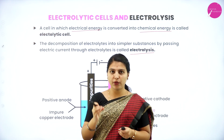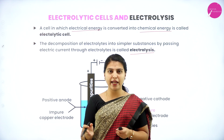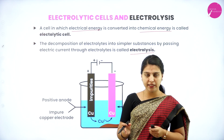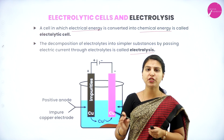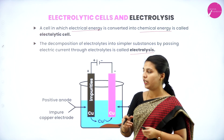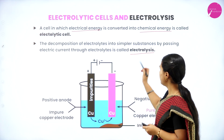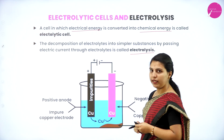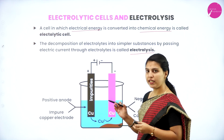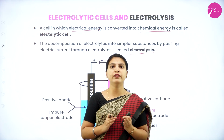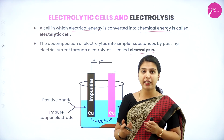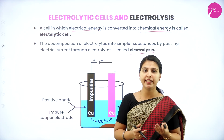The decomposition of electrolytes into simpler substances by passing electric current through electrolytes is called electrolysis. If you understand the word itself: 'lysis' means breaking, 'electro' means electric current. By using electric current, the decomposition of electrolytes into simpler substances is called electrolysis. In the electrolytic cell, there is a difference from the electrochemical cell.